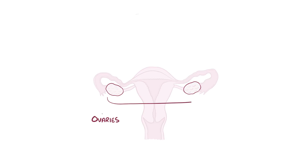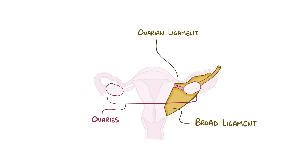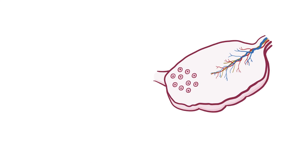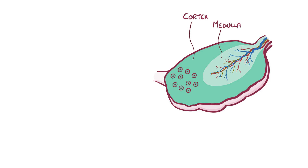The ovaries are a pair of whitish organs about the size of walnuts. They're held in place slightly above and on either side of the uterus and fallopian tubes by ligaments — specifically the broad ligament, the ovarian ligament, and the suspensory ligament. The suspensory ligament is particularly important because the ovarian artery, ovarian vein, and ovarian nerve plexus pass through it to reach the ovary. If you slice the ovary open, there's an outer layer called the cortex, which has the ovarian follicles scattered throughout it, and an inner layer called the medulla, which contains most of the blood vessels and nerves.